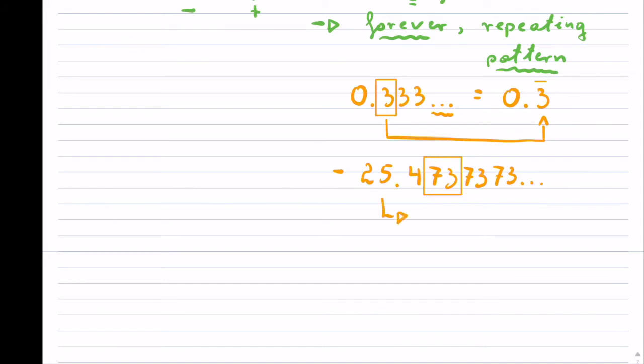I would write this as simply negative 25.4. Notice that does not repeat, so it stays. And then the 7.3, I put a bar over both because that's exactly what happens with the repetition.